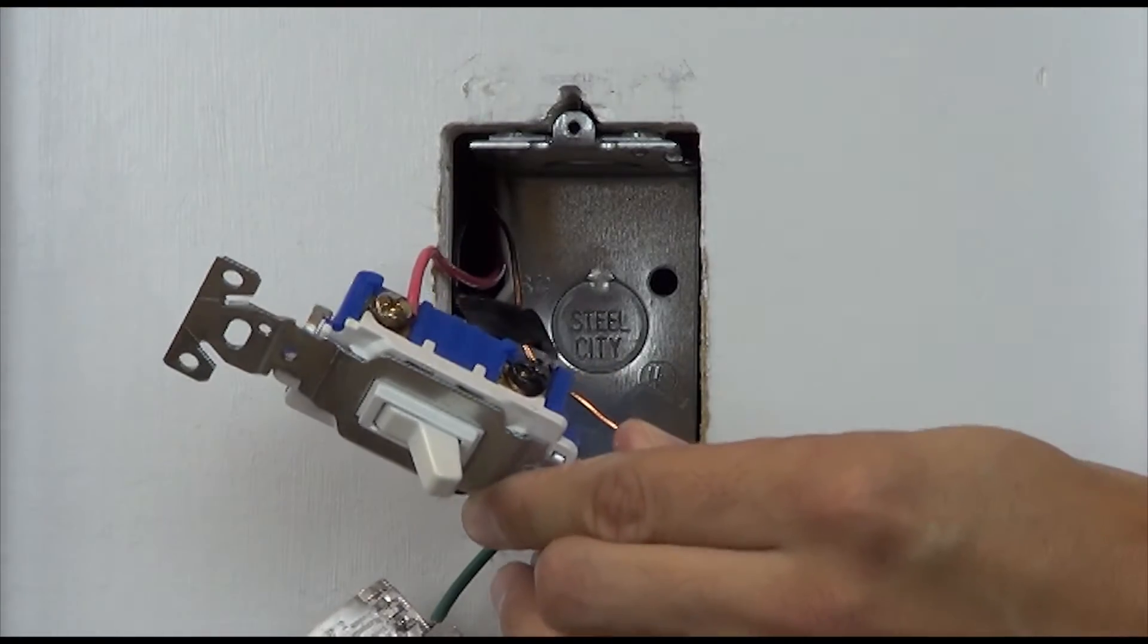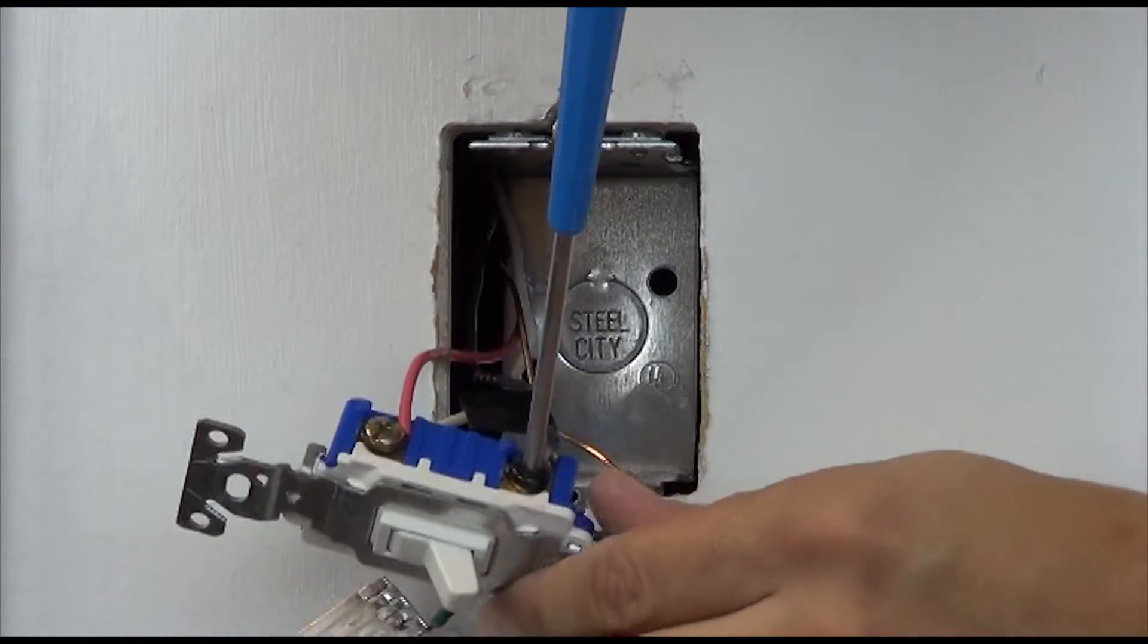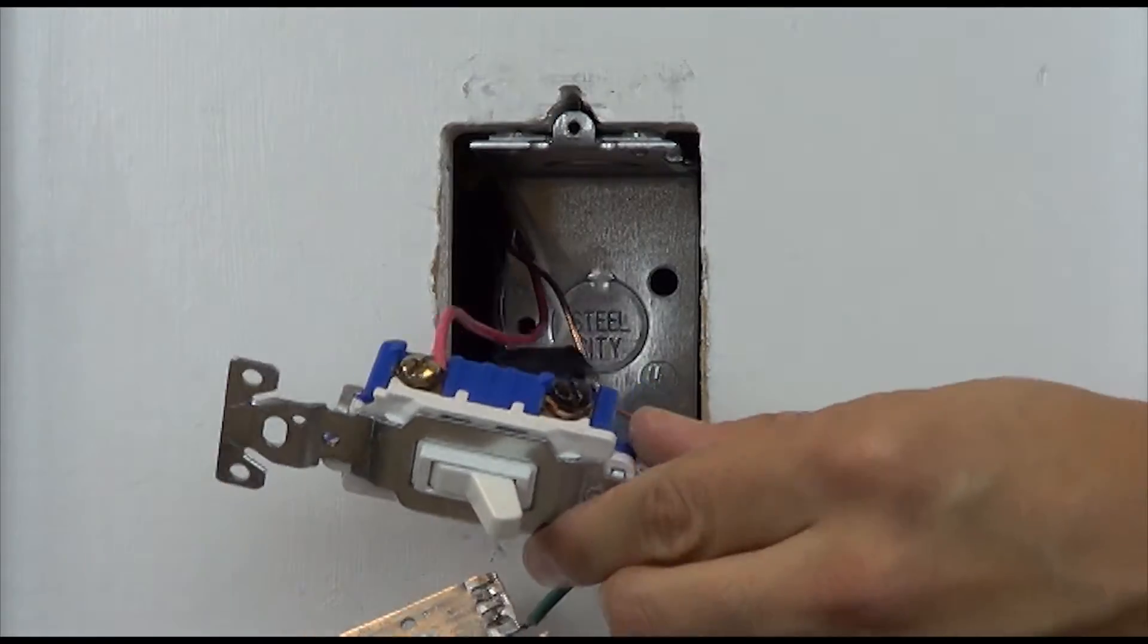Remove the tagged wire on the black screw from the switch and connect it to the dark colored screw on the dimmer.